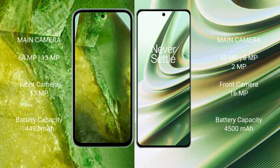Google Pixel 8a features a dual rear camera setup: 64MP plus 13MP, and a 13MP front camera. OnePlus 10R features a triple rear camera setup: 50MP plus 8MP plus 2MP, and a 16MP front camera. Google Pixel 8a has a 4,492 mAh battery with 30W fast charging support.